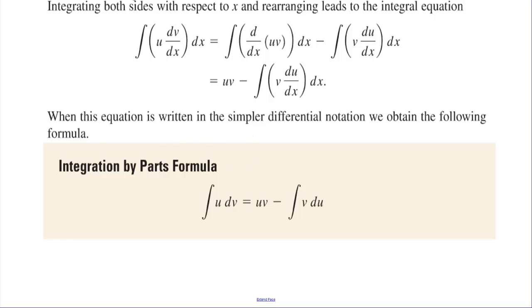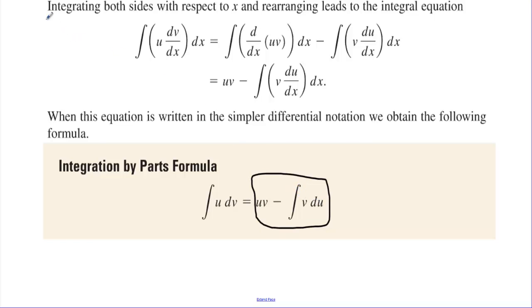What you really need to know to do integration by parts is that formula: uv minus the integral of v du.